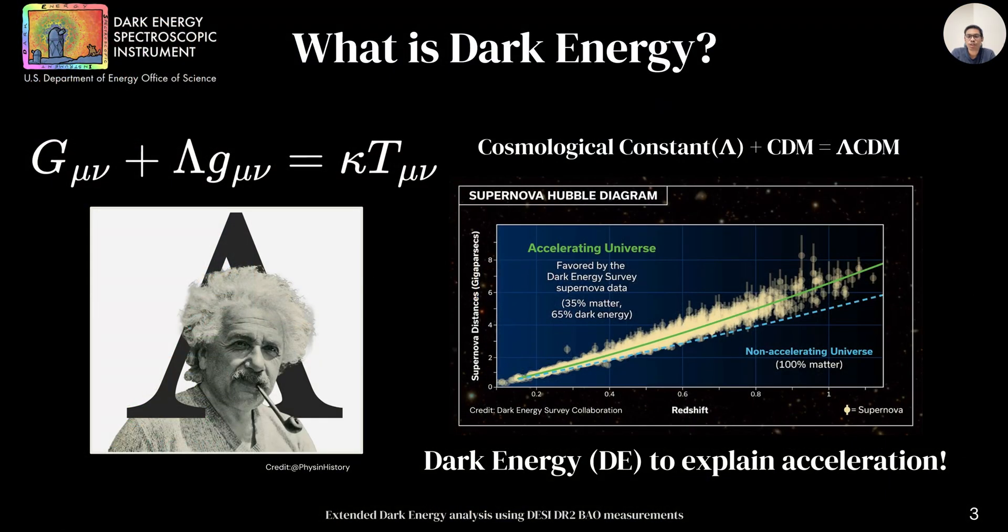Let's start with a brief introduction. Dark energy is a mysterious component introduced to explain late time acceleration of the universe. The idea of dark energy dates back to Einstein, who introduced a constant representing vacuum energy to balance gravity. This constant became a key part of standard model lambda CDM after the discovery of universe acceleration in 1998.